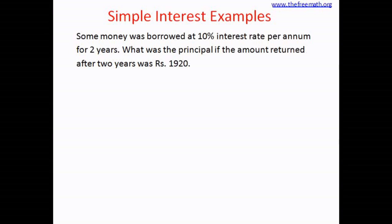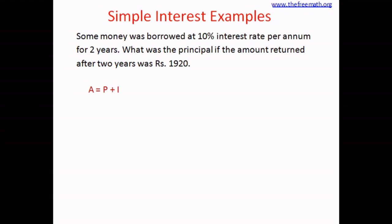This problem talks about the amount returned. The formula for the amount returned is A equals P plus I, where A is the amount, P is the principal, and I is the interest. The formula for calculating simple interest is P times R times T divided by 100.